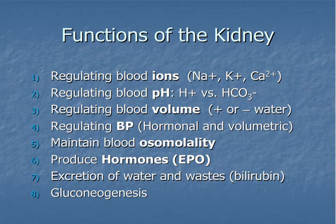The kidney is also important for producing hormones, most importantly erythropoietin or EPO. Erythropoietin is the hormone responsible for manufacturing red blood cells within the red bone marrow. Finally, the kidney is important for excretion of metabolic wastes such as urea and uric acid.